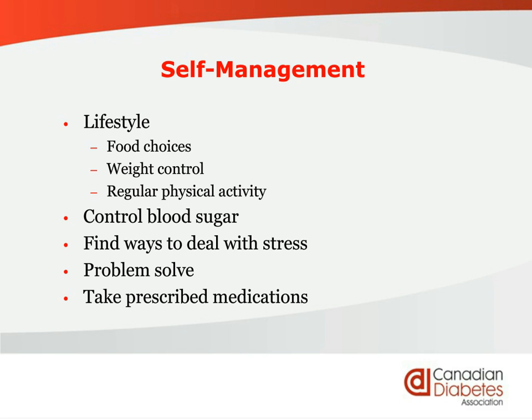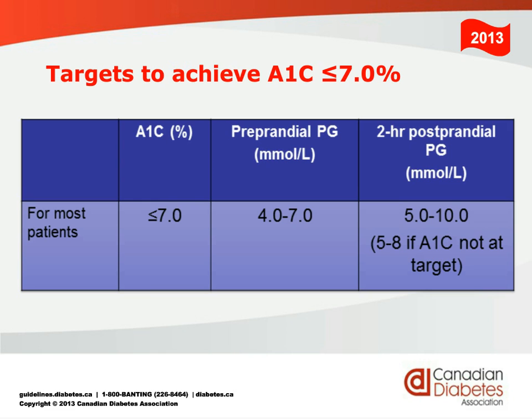The targets for blood sugar control are to aim for an A1C — that's the three-month lab test your doctor sends you for — of less than 7%. Get your blood sugars before meals in the 4 to 7 millimoles per liter range. Check your blood sugar two hours after your meal as well, because you don't just have diabetes first thing in the morning, and you're aiming for 5 to 10 on your blood glucose meter. If you're not at that A1C of 7% or less, you're aiming for a target of 5 to 8.